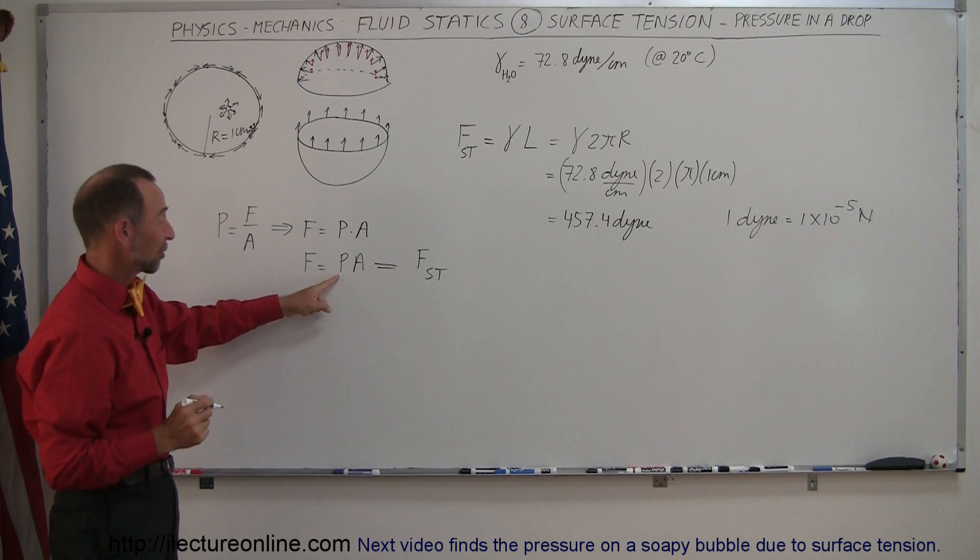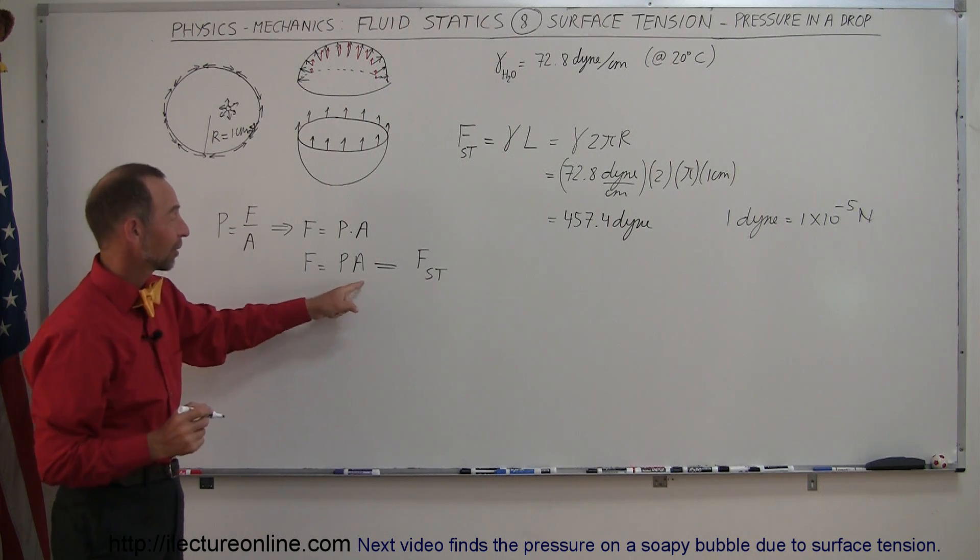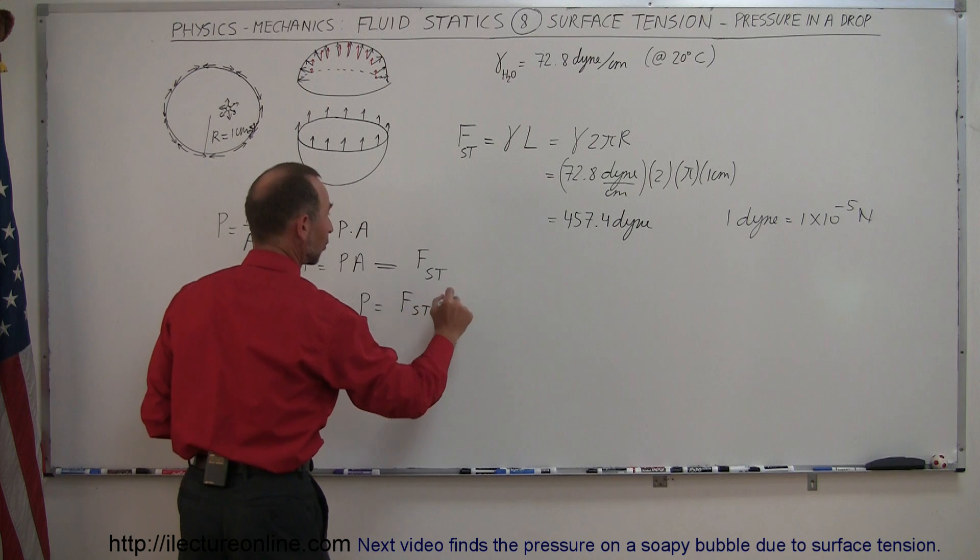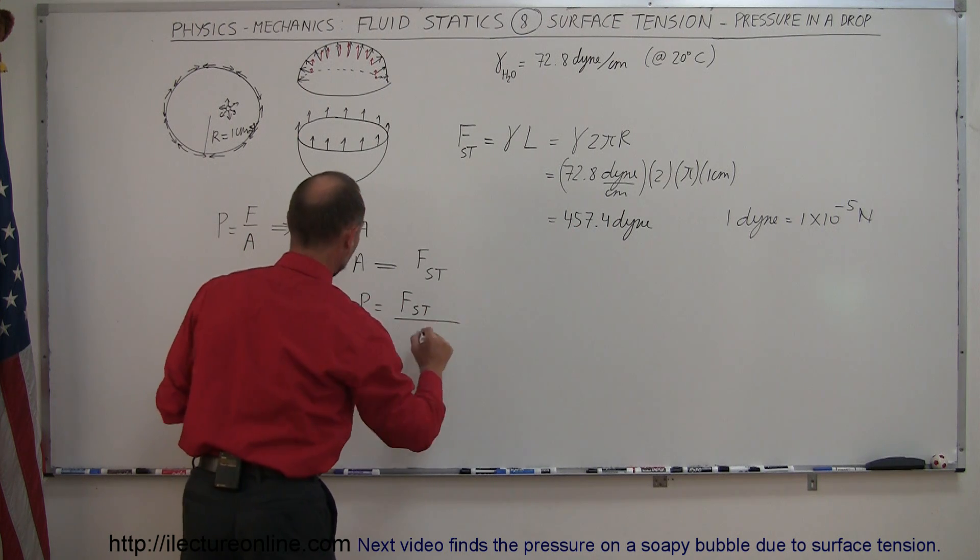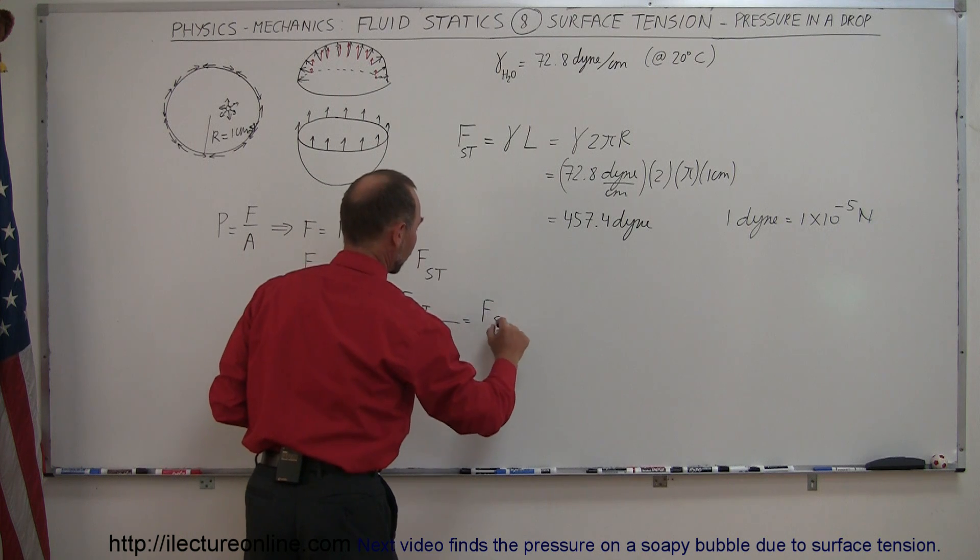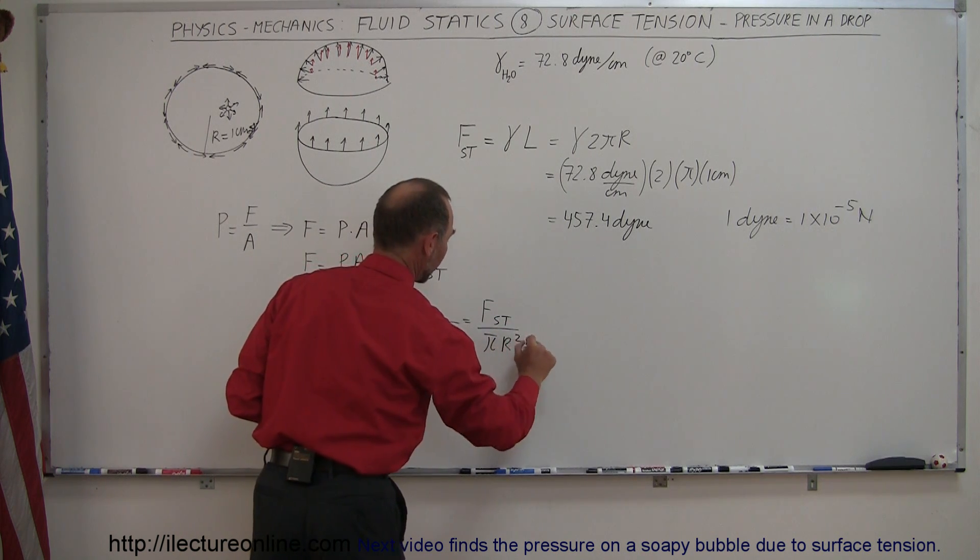So the force is equal to pressure times area, and we're going to set that equal to the force of the surface tension. Then all I have to do here is to find pressure is to divide both sides by the cross-sectional area. So pressure is equal to the force of the surface tension, which we calculated over there, divided by the cross-sectional area.